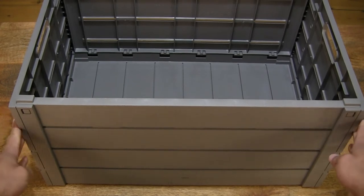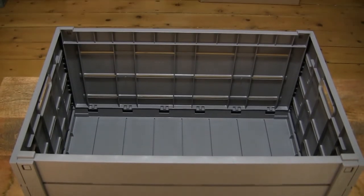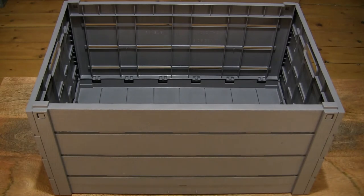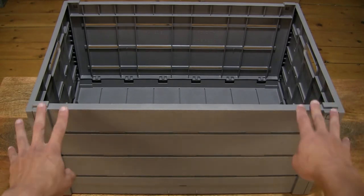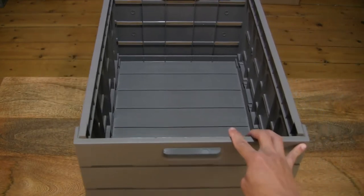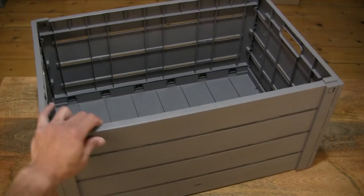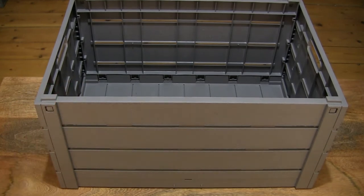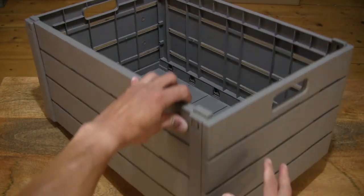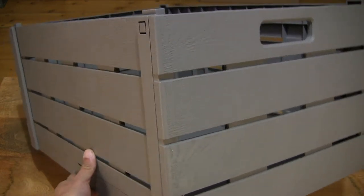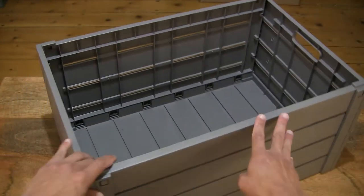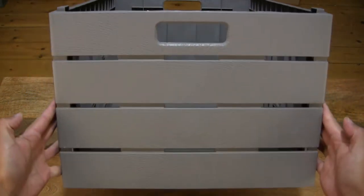I'm just going to tilt the camcorder up so you have perhaps a little more idea of the size of this Strata wood effect folding crate right there in the middle of the frame. As I mentioned, this one is in taupe. Just giving you a nice clear look at the details of this collapsible crate, giving you perhaps a better look in as many aspects as possible.